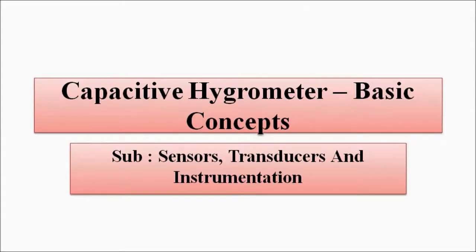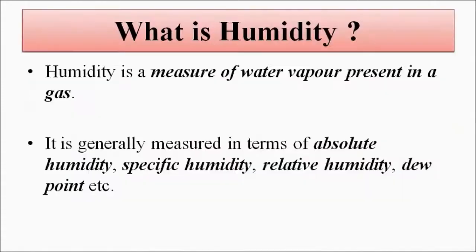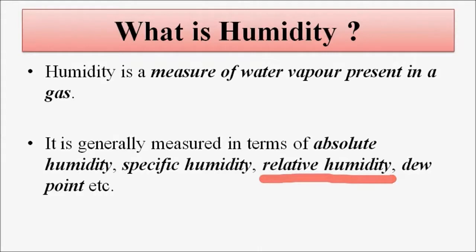Before discussing that, let us just have a quick look at the basic concepts related to humidity. Humidity is basically the amount of water vapor or moisture present in a substance — mainly in gas — when it comes to measurement, in the atmosphere, in a particular environment or surroundings. It is generally measured in terms of absolute humidity, specific humidity, or relative humidity, but mostly you will find that humidity sensors give output in terms of relative humidity.